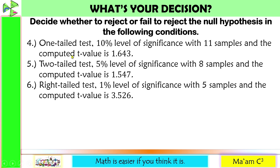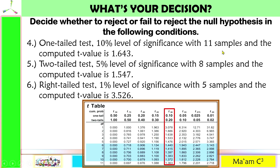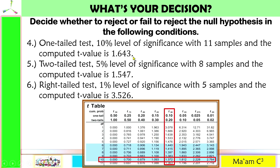Now we have computed T values, so we need the T critical values from the T table. Number 4 is a one-tailed test at 10% level of significance, with 11 samples, giving degrees of freedom of 10. The critical value is 1.372. The computed T value is 1.643, which is greater than 1.372. Therefore, our decision is reject the null hypothesis.